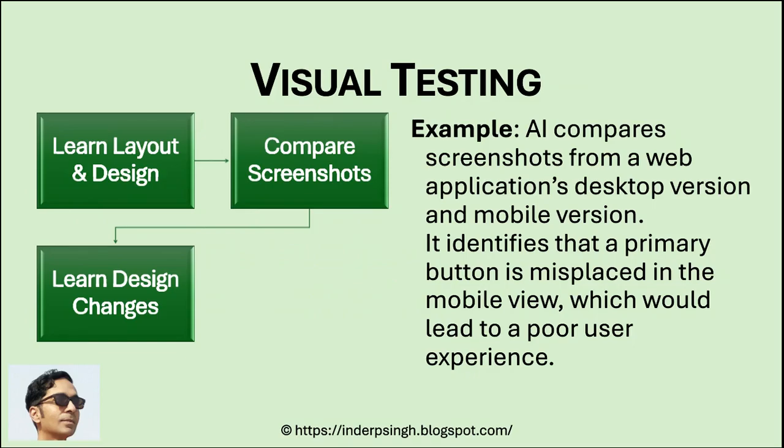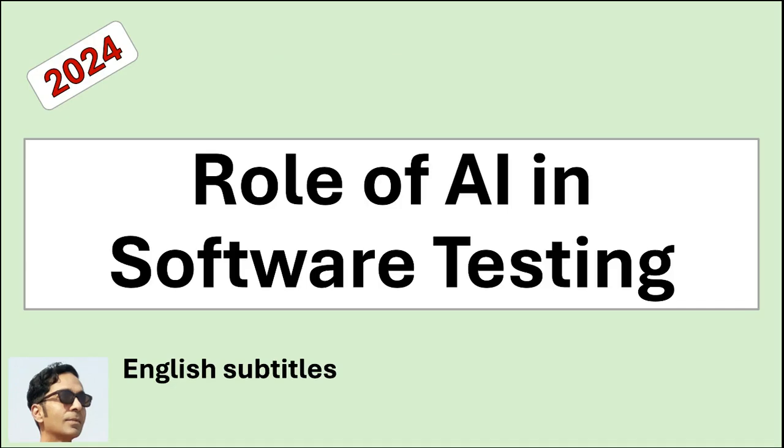AI can also perform visual testing by comparing screenshots to detect UI discrepancies. AI can be trained to recognize the correct layout and design of a web page. During testing, it compares actual screenshots of the application against the expected design. If there is any misalignment, missing element, or unexpected change, the AI flags it for further inspection.